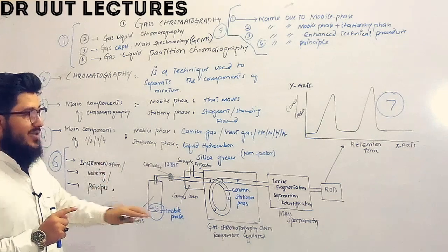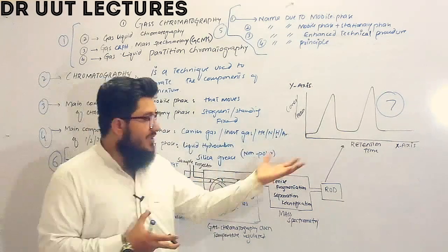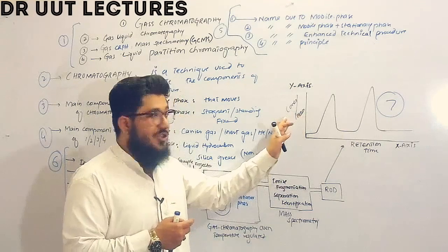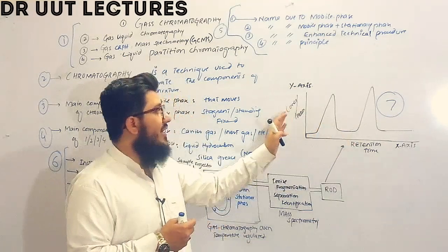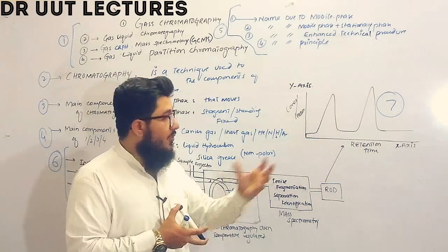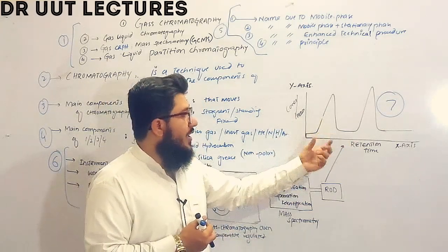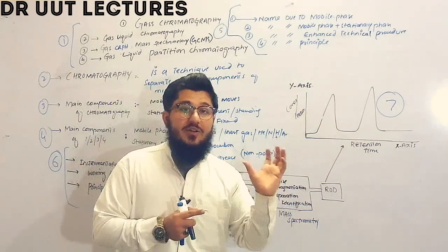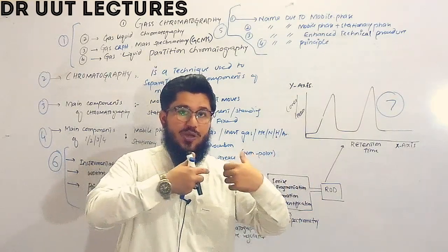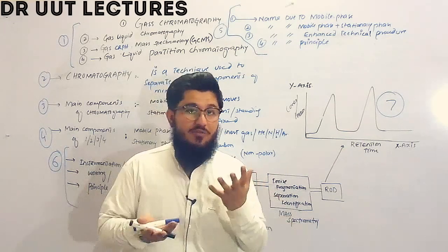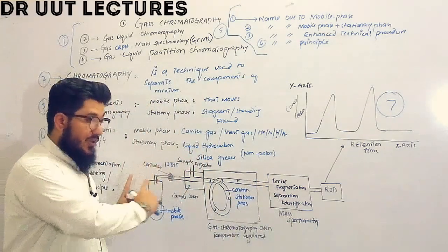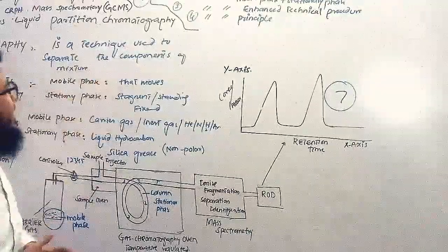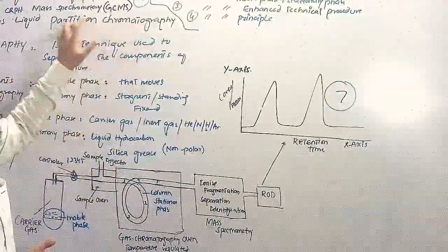The seventh portion covers the graphical representation — the actual result shown on the readout device. On the x-axis we have retention time; on the y-axis we have concentration or absorbance. From this graph we calculate concentration and retention time, then compare these readings with standard readings. After comparison, we can identify what components were present in the mixture.